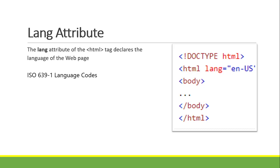Our first example is the lang attribute. The lang attribute of the HTML tag declares the language of the web page. We use the lang attribute because we follow ISO 639-1, which defines language codes. In our example, you can see that the lang attribute is inside the start tag of HTML — so: HTML, then attribute name is lang, is equal to, and the value is en-us.